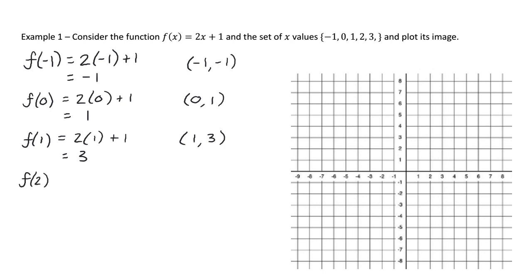For f of 2, I've got 2 bracket 2 plus 1. So that's 5. So I've got 2, 5. And then my last one, f of 3. It's going to be 2 bracket 3. Add 1, which gives me 7. So my last coordinate is 3, 7.